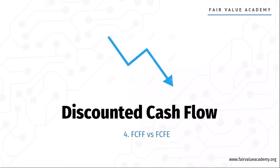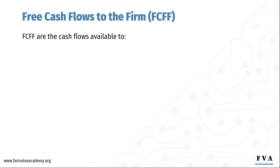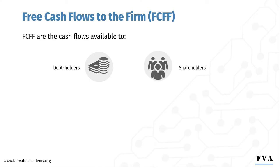In this session, we will explain the difference between free cash flows to the firm versus free cash flows to equity. Free cash flows to the firm are the cash flows available to all funding providers. This includes debt holders and shareholders — both preferred stockholders or preference shareholders and common stockholders. Free cash flows to the firm is also known as unlevered free cash flows.